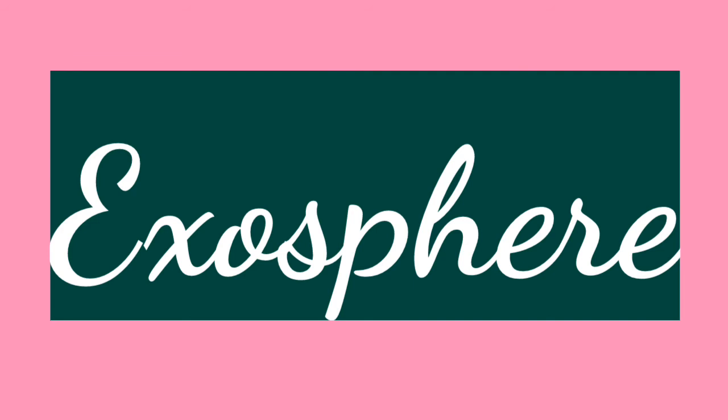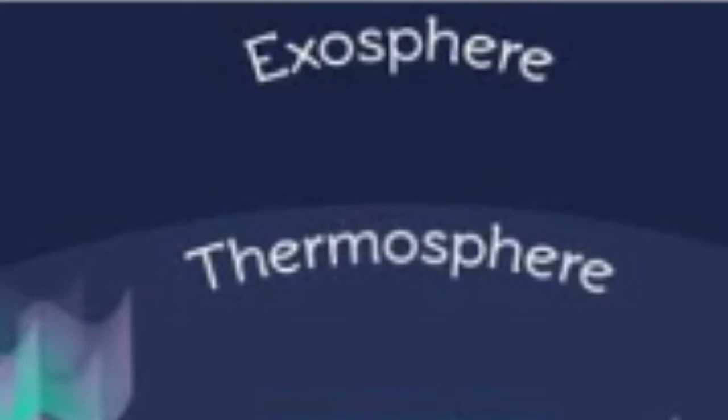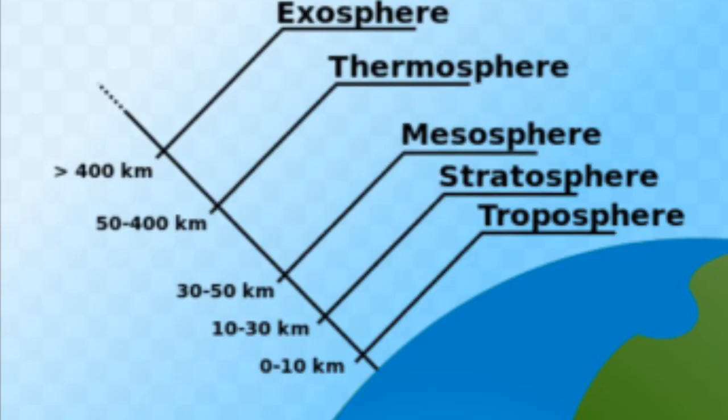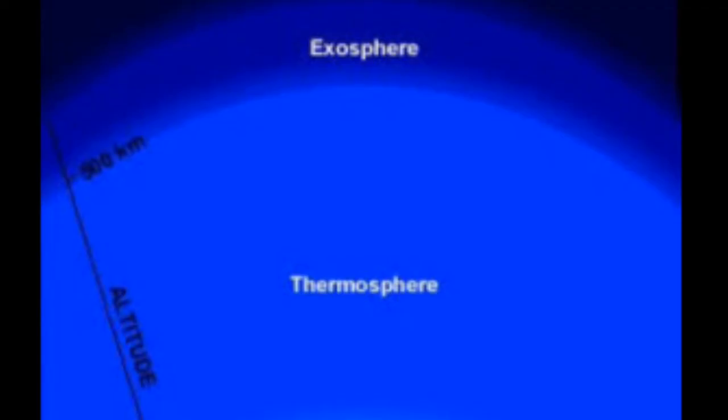Last is exosphere. This is the outermost layer, where the earth's atmosphere becomes a part of space. It contains very little air — naa ke barabar hoti hai. Weather satellites orbit the earth at a height of about 700 to 1500 kilometers, and communication satellites at a height of 36,000 kilometers.